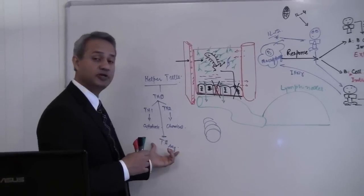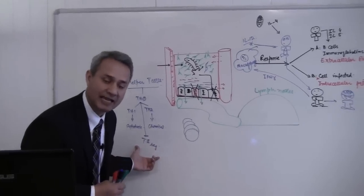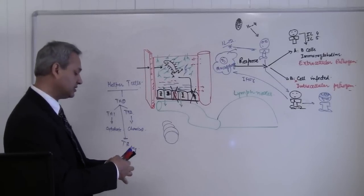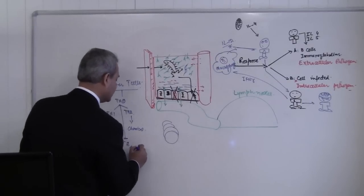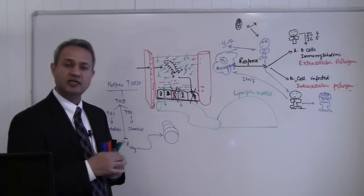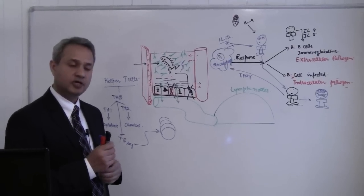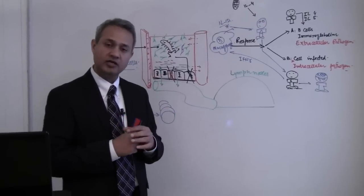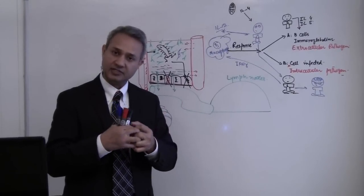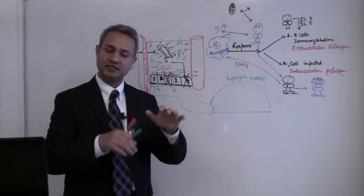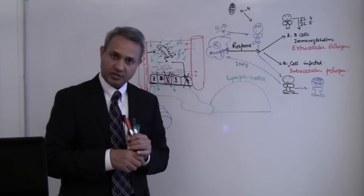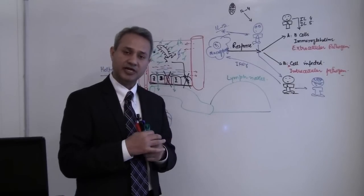What happens is that these regulatory T cells — which are also helper T cells — help the immune system by dampening the activity of these T cells. You would also see that FAS–FAS ligand interactions cause apoptosis in T cells, and that is how the T cell number is reduced to dampen the immune reaction.